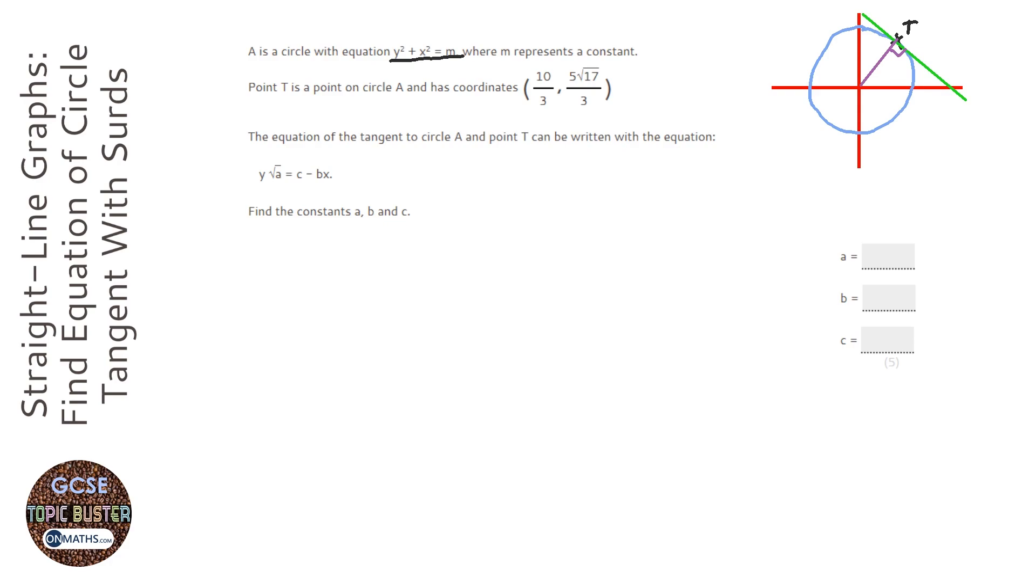So, the first thing we're going to do is work out the gradient of, we're going to call this m1, the gradient of this radius. Then we're going to find out what the gradient of this second line is. And then we're going to find out what c is, so we can actually find out the equation of the line, because it will be y equals mx plus c. The only thing we've got left is c to work out if we've already got the gradient. So, a lot going on there. We're also told the coordinates of T, but they're in a not very helpful form. They've got surds and they're in fractions.